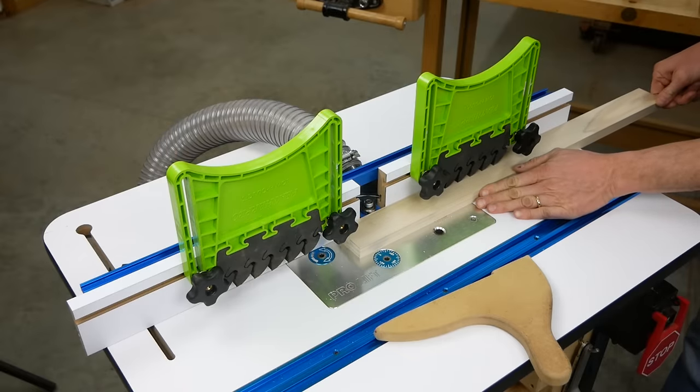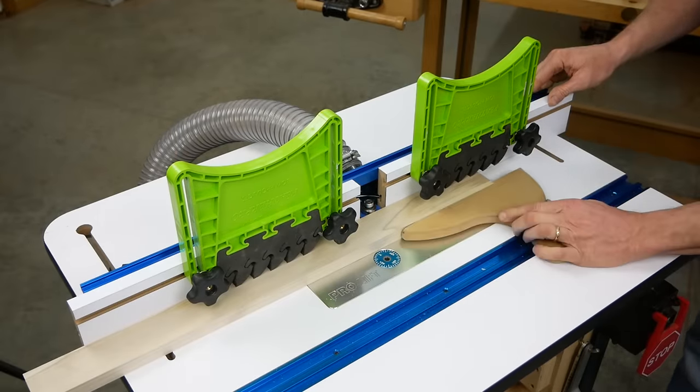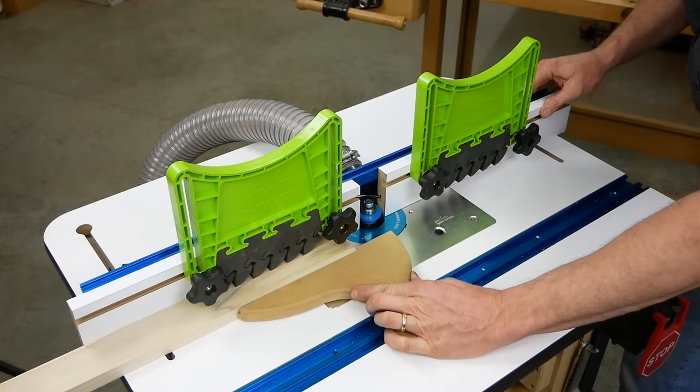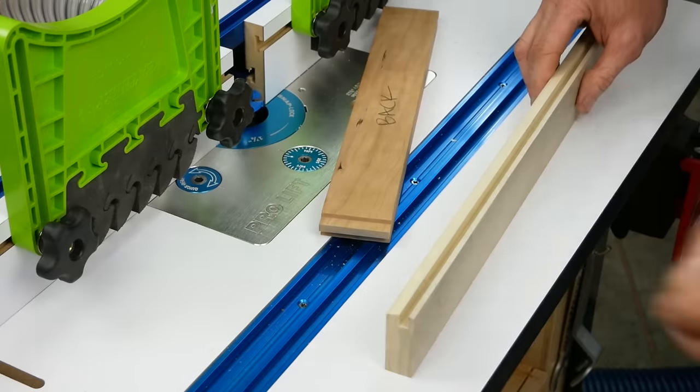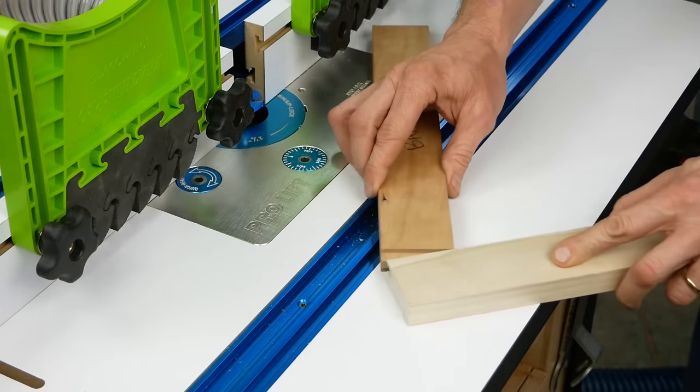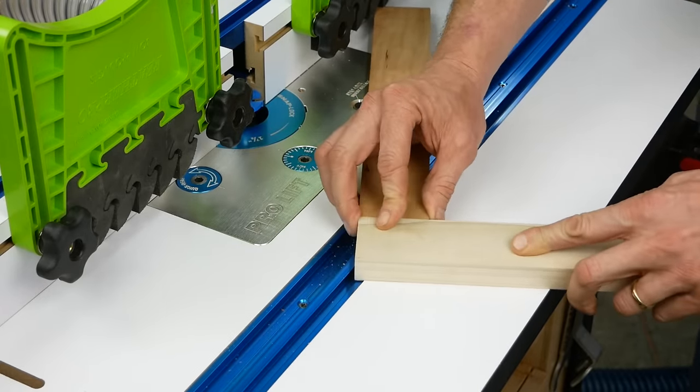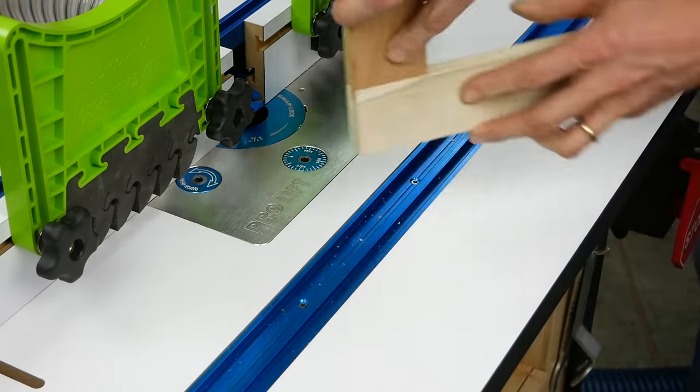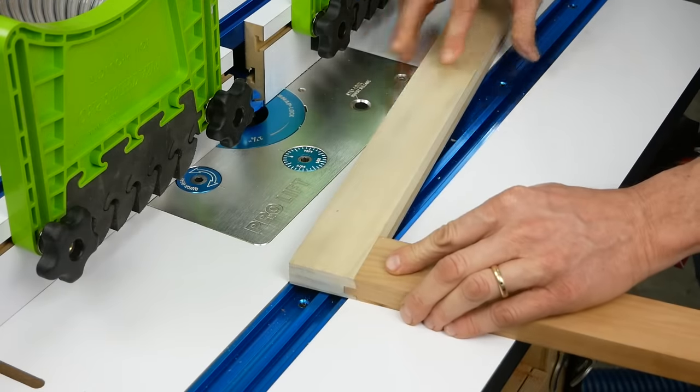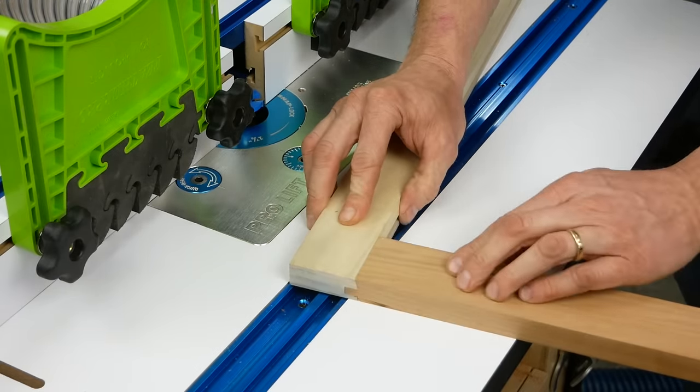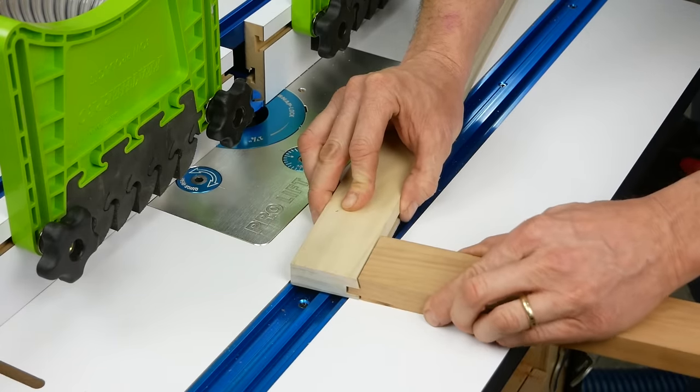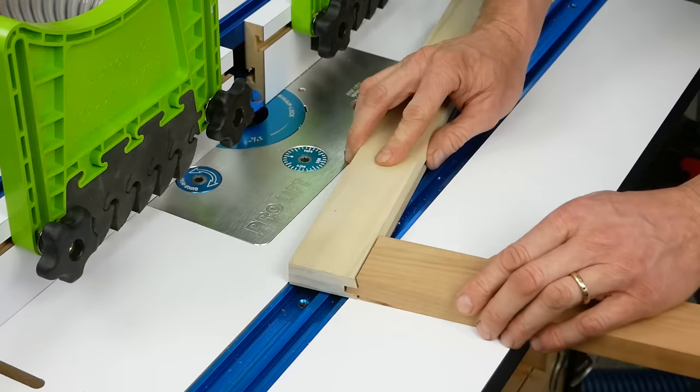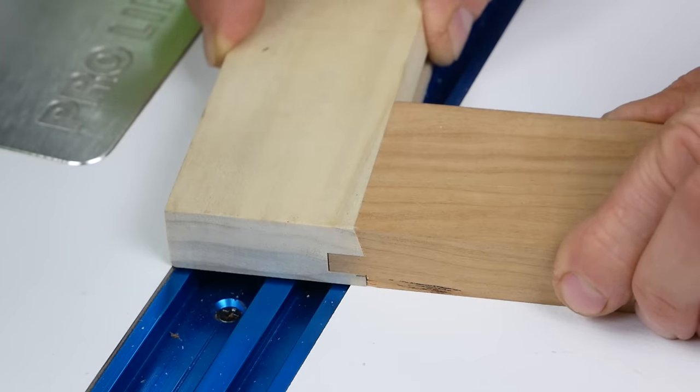Now start the router and run a test piece through your setup, using a push stick to keep your fingers clear. Go ahead and fit the coped rail into the sticking cut you just made and check the fit of the parts. What we're looking for here is a flush connection between the parts. We also want to make sure that the rail is fully seating into the stile. If these parts are standing apart, double check to make sure that the router table fence hasn't moved during the cut. What you want is a nice tight fit.